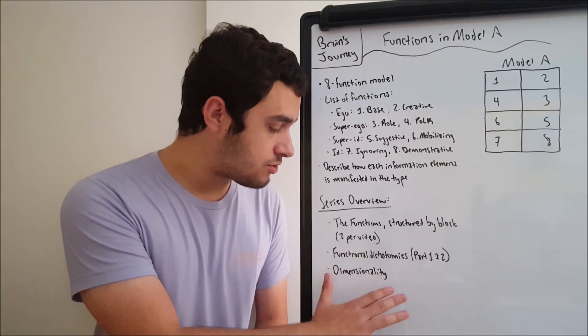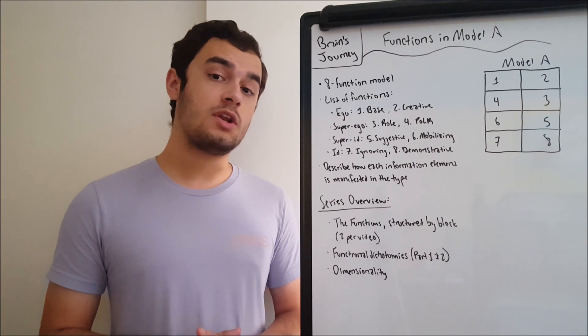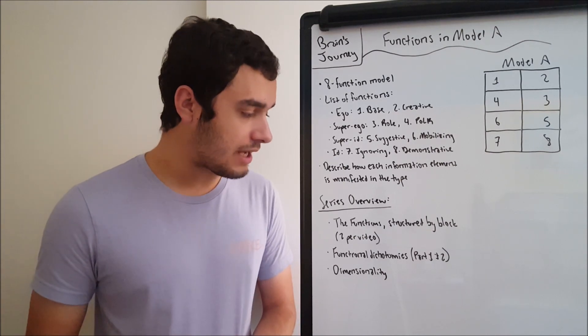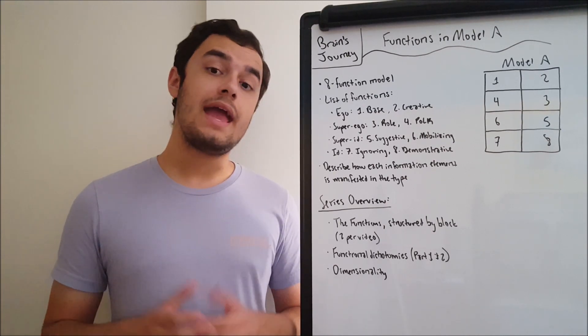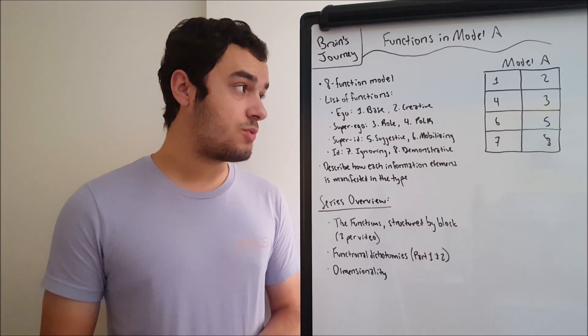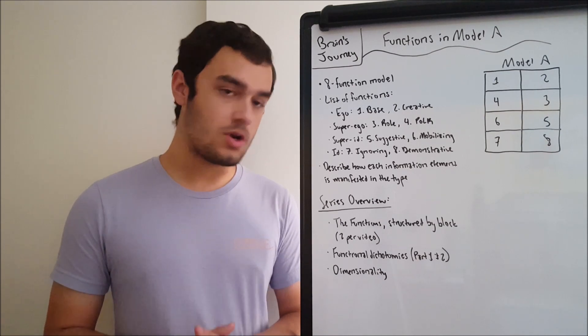After that, we'll be looking at the functional dichotomies, split them into part one and two, like I did for the elemental dichotomies. And there we'll be looking at how the functions can be compared and contrasted and how Model A is structured.